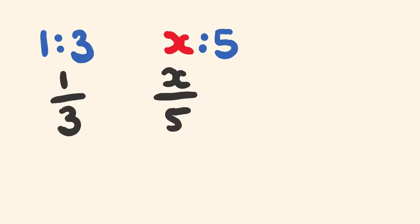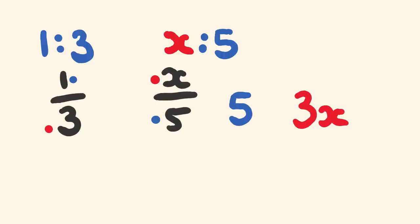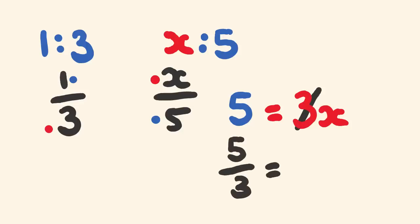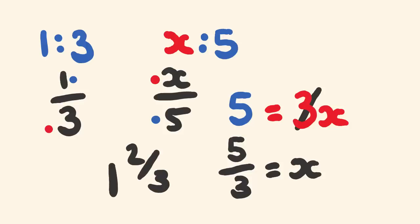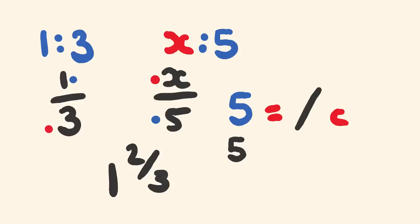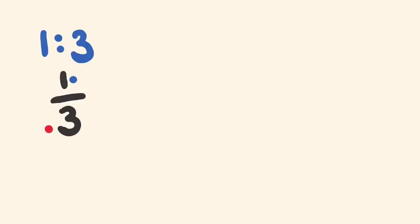We cross multiply: 1 times 5 is 5, and 3 times x is 3x. Keeping these equivalent, we solve for x by dividing both sides by 3, giving x = 5/3. Five divided by three is one and two thirds, so we need one and two-thirds cups of rice. That's how we can use cross multiplication to solve for an unknown in a proportion.